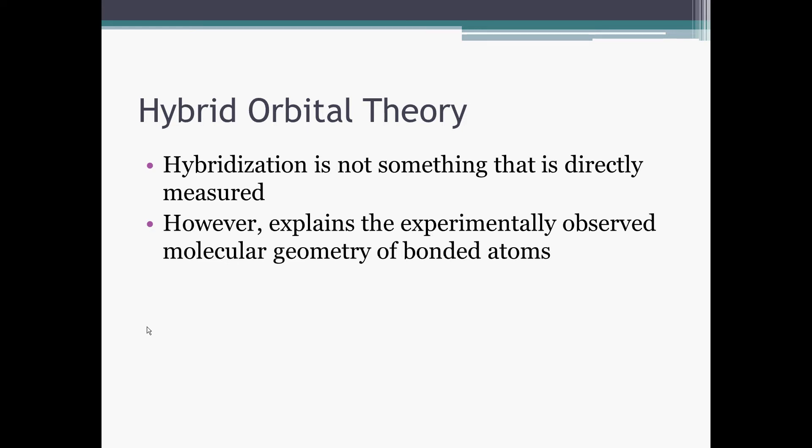We don't directly measure what's going on. This is a mathematical model, and it does a very good job at explaining where the atoms are. There's still modern research going on into why the electrons actually arrange the way they do, but hybrid orbital theory is very good at predicting the actual shapes of molecules. And that's why we use it.